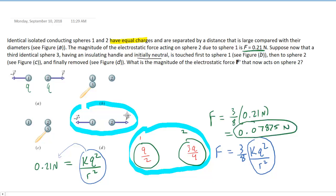And that is what the question is actually calling F prime. The reason they put a little prime on it is because this new electrostatic force is much smaller than the original electrostatic force. And so we have the final answer to our question.